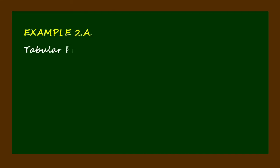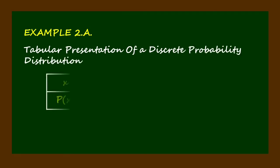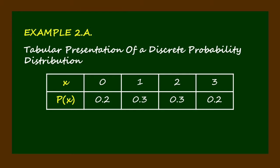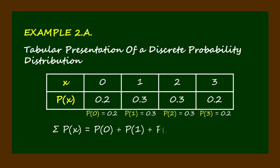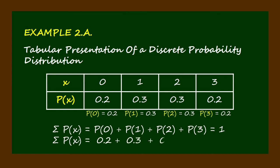Let's take a look at the tabular presentation of a discrete probability distribution as an example. In the table, the random variable x assumes the values 0, 1, 2, and 3. The corresponding probabilities of these values are 0.2, 0.3, 0.3, and 0.2 respectively. These probabilities are each less than 1 but greater than 0, and when added the sum is 1. Since the two properties are both satisfied, therefore this is a discrete probability distribution.